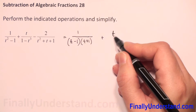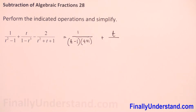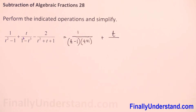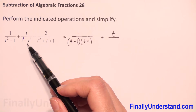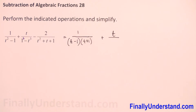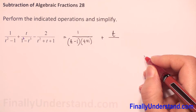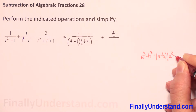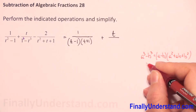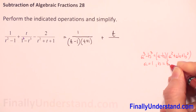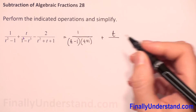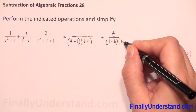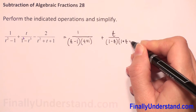Next we have plus t over, and we have one minus t cubed. If we rewrite one as one to the third power, we now have the difference of two perfect cubes formula. That formula is: a cubed minus b cubed equals a minus b times a squared plus ab plus b squared. In our example a equals one and b equals t, so we get one minus t times one plus t plus t squared.